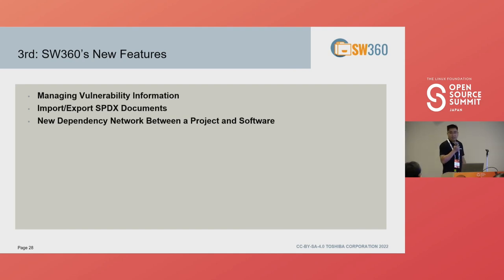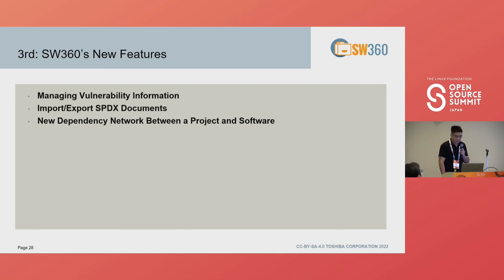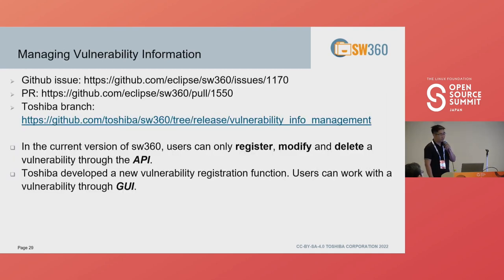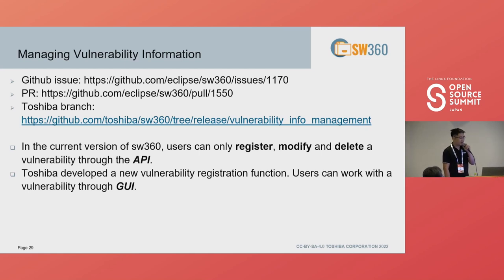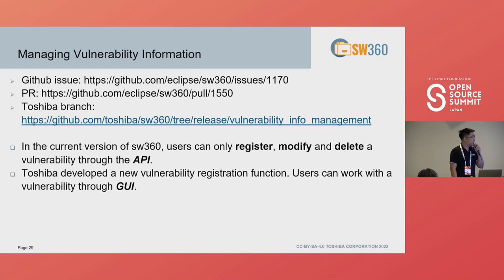Thank you, Koki. In the next section I would like to introduce three big features implemented in 2022. The first one is managing vulnerability information. In the current SW360, users can manage vulnerability information using the API. Toshiba developed a new function so users can register, modify, and delete vulnerabilities using the web interface.